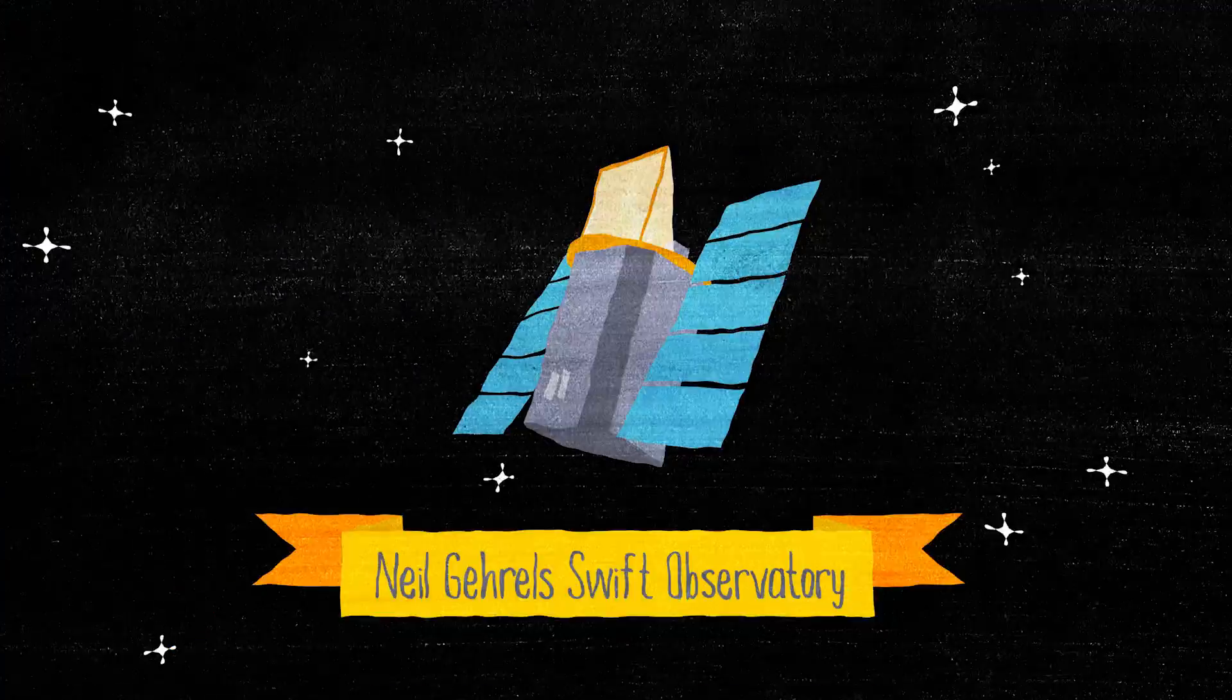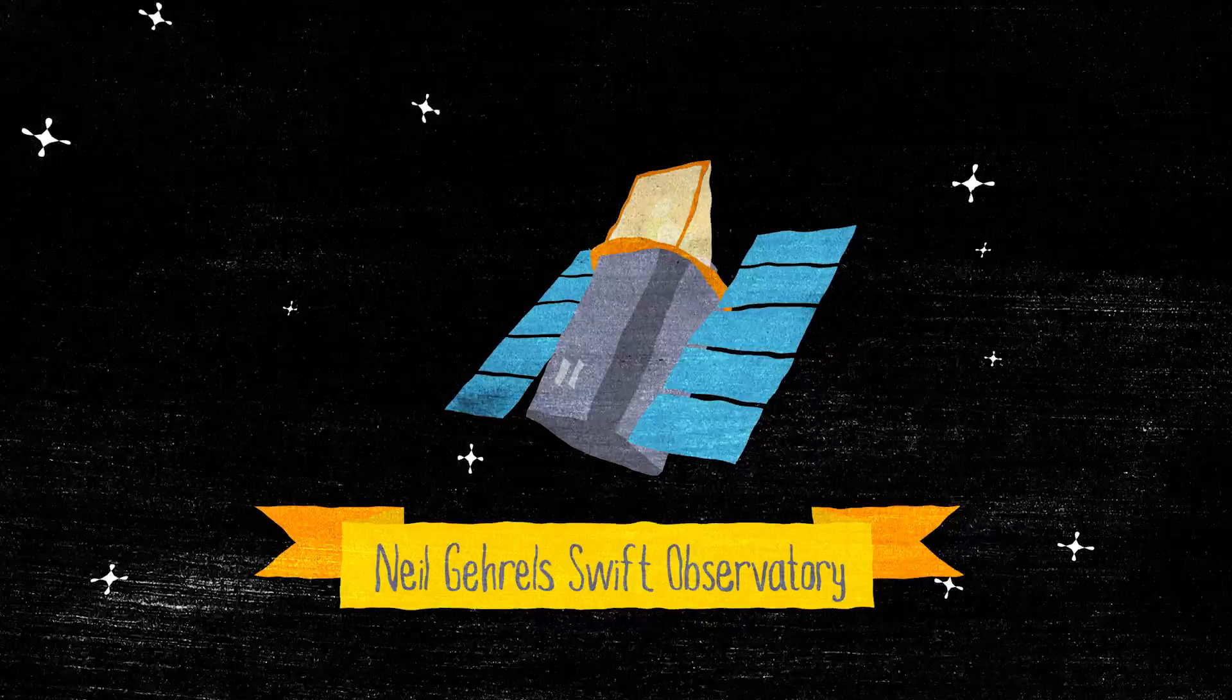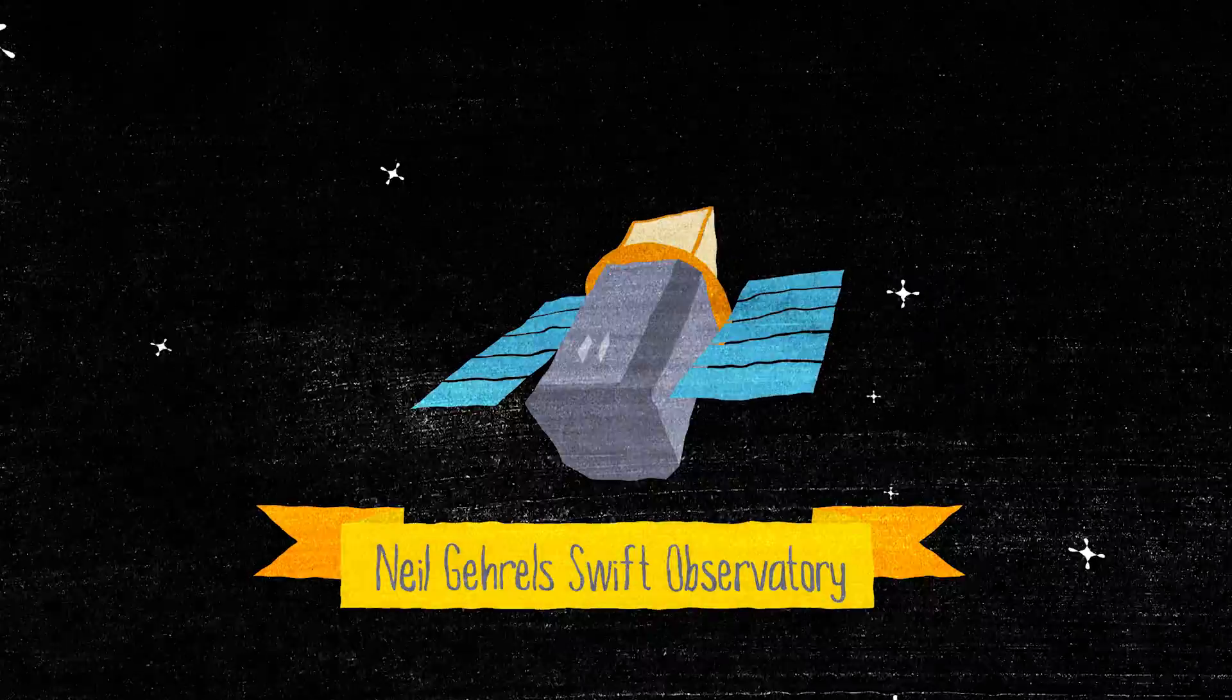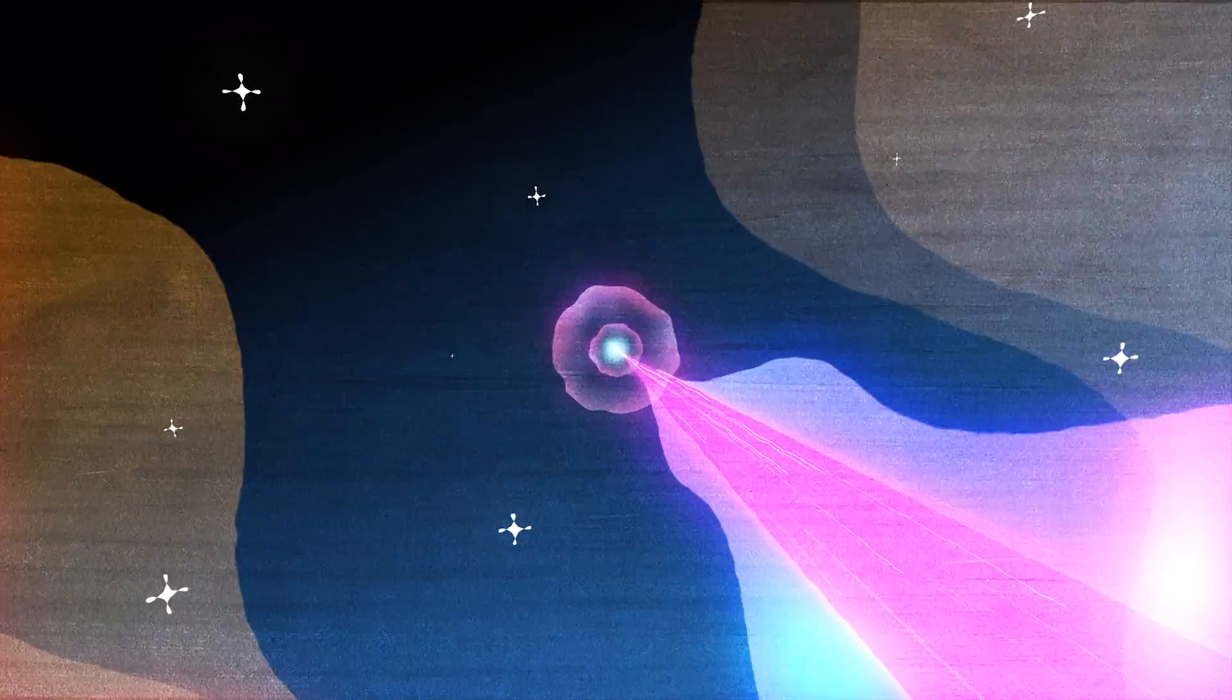So Swift is an observatory and it was launched about 15 years ago and it's designed to study gamma-ray bursts, which are the most powerful explosions in the universe.